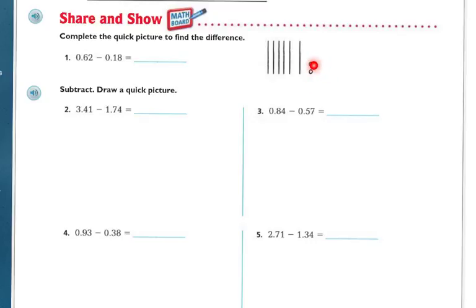So I'm going to have to borrow because I need 8. I need more hundredths, so let's take one of these tenths and borrow it. I'm going to break it into 10 hundredths — that gives me 10 more. Now I'm going to subtract. I need to subtract 1 of the tenths — I'll do that in blue.